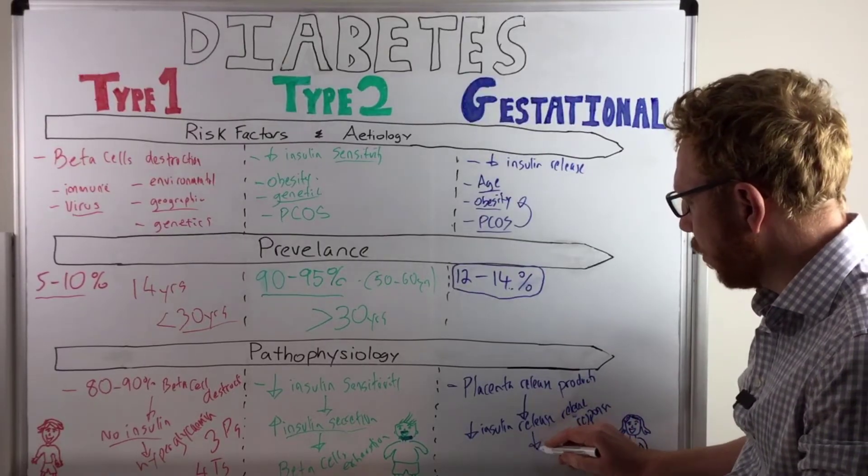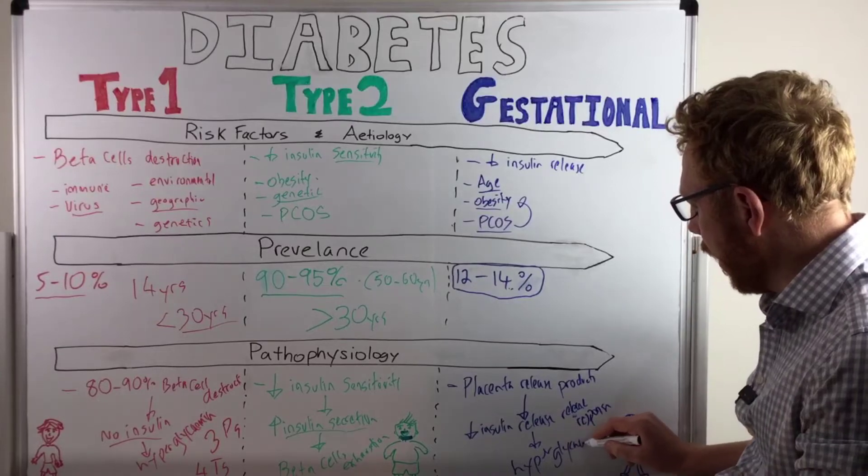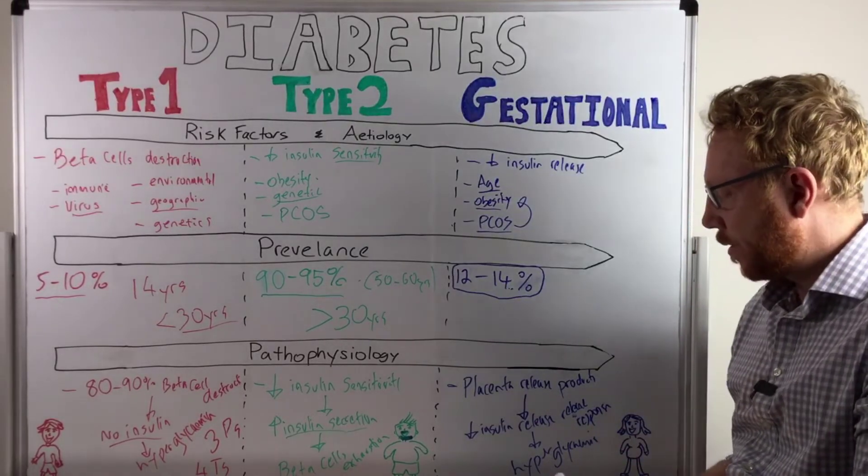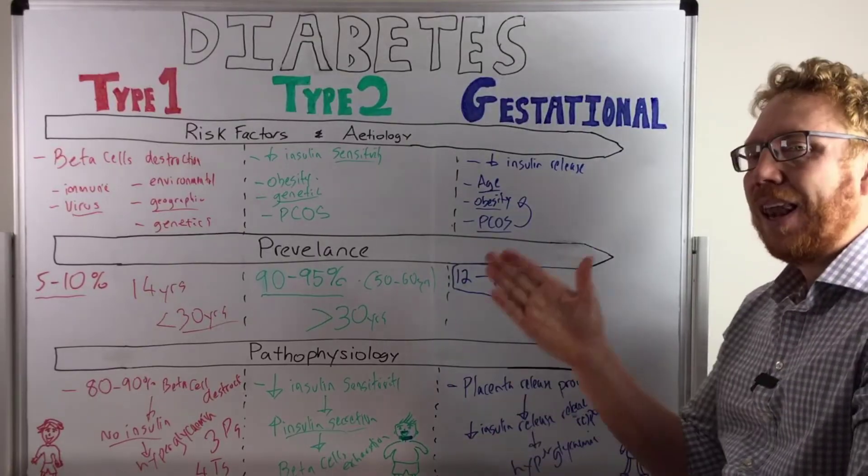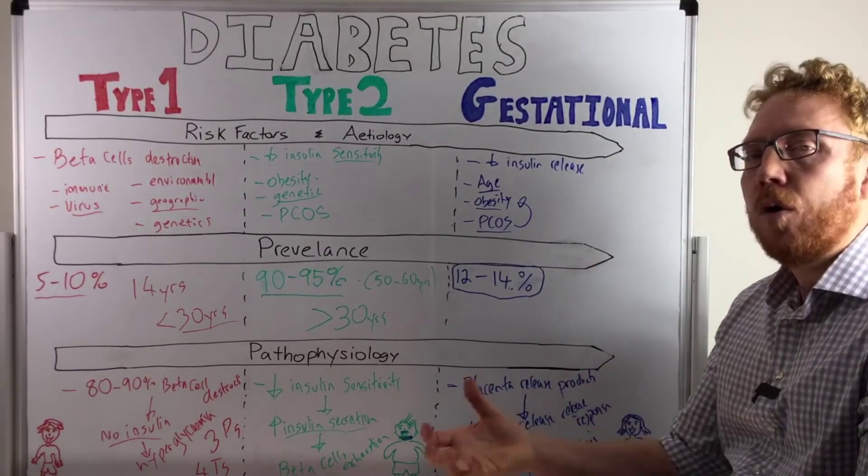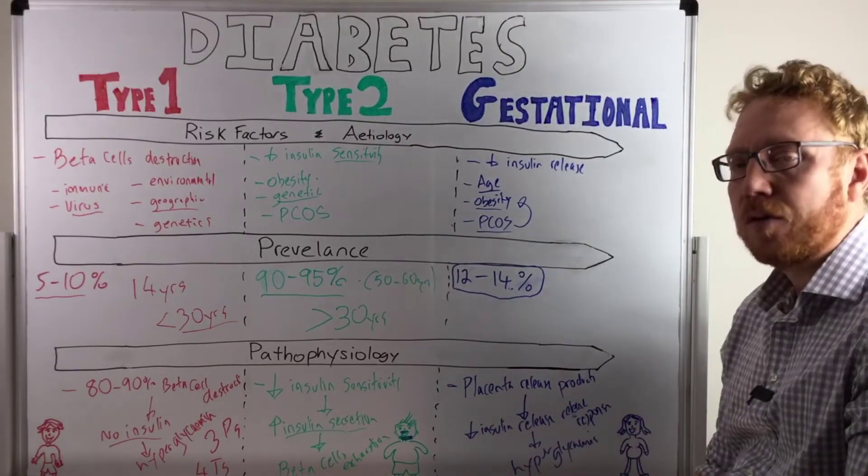And what that would result is in hyperglycemia. Now this usually takes place. You would most likely see this, and this is where it's screened in the late phase of the second trimester or in the early phase of the third trimester, where this would be probably the most exaggerated.